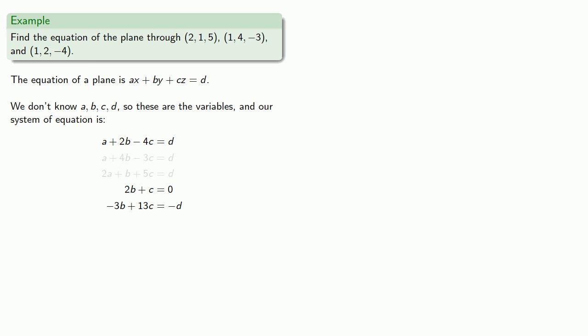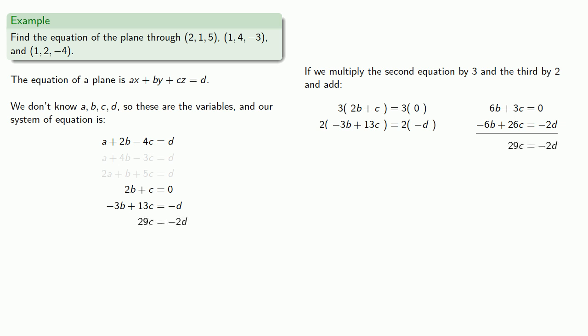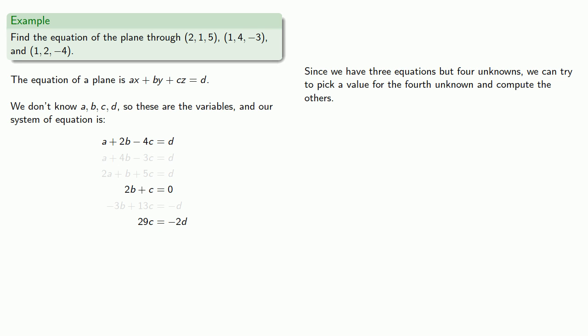Now, in our second and third equations, the coefficients of b are different. But if we multiply the second equation by 3 and the third equation by 2 and add. We eliminate b. And we get a new third equation. Now, since we have three equations but four unknowns, we can try to pick a value for the fourth unknown and compute the others. So notice that if we choose a value for d, then finding c will require dividing by 29 and finding b will require dividing by 2. So for convenience, we might choose d to equal 29 times 2. That way, when we have to divide by 29 or by 2, at least we're starting with something that can be divided by both and hopefully we'll avoid fractions.